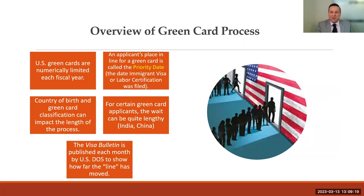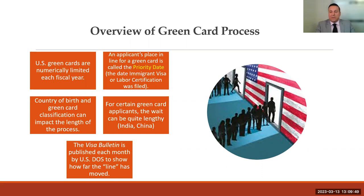Starting with an overview of the green card process: how long does it take? It depends on the process, but it can be a while. U.S. green cards are numerically limited each fiscal year, which runs October 1st to September 30th. An applicant's place in line for a green card is called the priority date — that's the date they file the first step, whether the I-130 for a marriage-based case, the I-140 for an employer-sponsored case, or the labor certification. The place in line is determined by the country of birth and the green card classification. Countries like India and China have very long waits in the employment category.